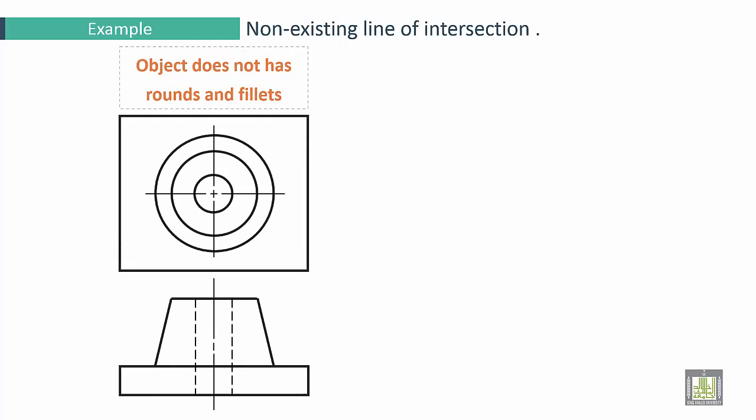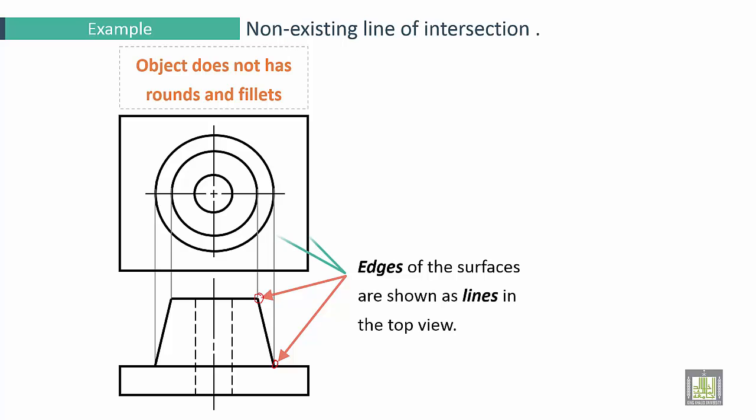We have an example here. Object does not have rounds and fillets. Here there is no round, no fillets. These are edges of surfaces that are shown as lines in the top view.